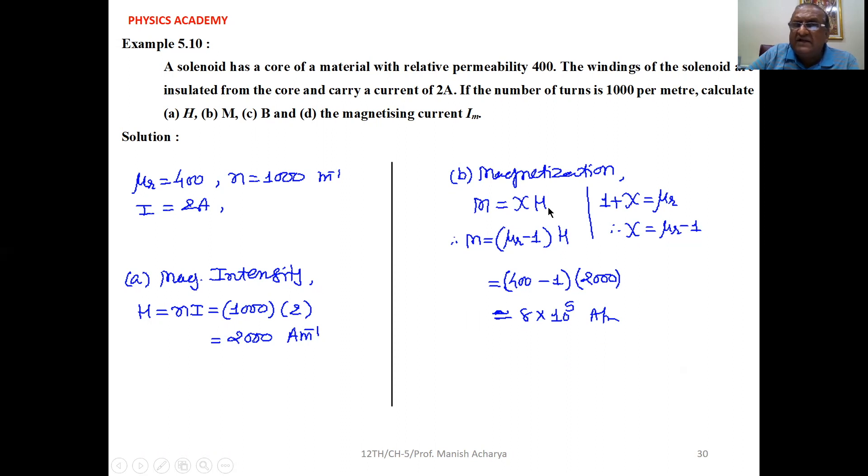Magnetization is χH, and 1 plus χ equals μ_R, so χ is μ_R minus 1. Substitute χ as μ_R minus 1. μ_R is 400 minus 1, and H is 2000. When you solve this, you will get the answer nearly equal to 8 into 10 raise to 5 ampere per meter.